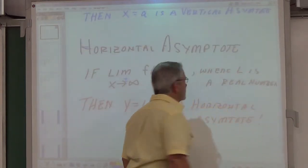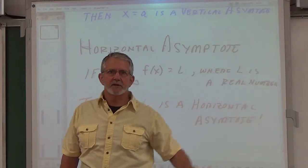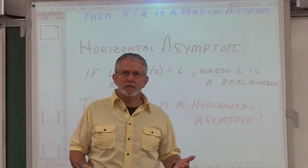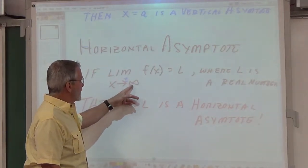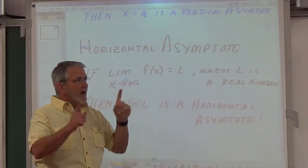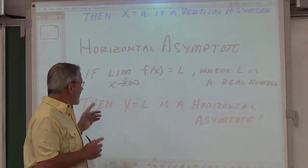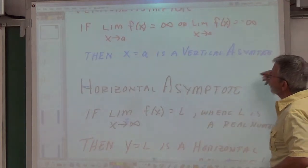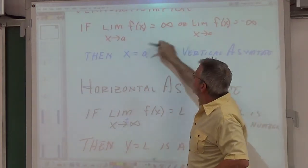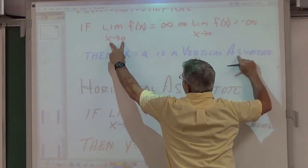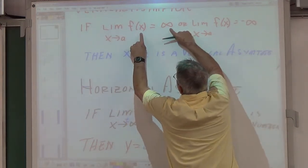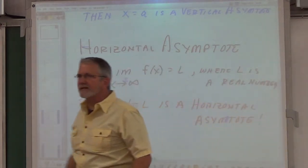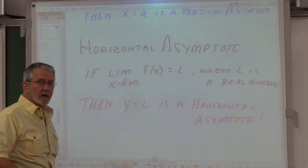Horizontal asymptotes — we talked about these last year informally as end behavior. What happens to the function when you put in Kerbillion? What happens when you put in negative Kerbillion? If that function approaches some real number, then that's a horizontal asymptote. Formally: if the limit as x goes to positive or negative infinity of f(x) equals L, where L must be a real number, then the line y equals L is a horizontal asymptote. So: if x goes to a and f goes to infinity, we have a vertical asymptote. If x goes to infinity and f goes to a real number, we have a horizontal asymptote. Two very simple definitions we need to start verbalizing in our explanations and justifications.